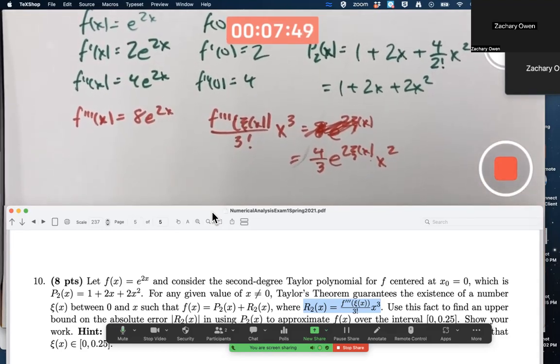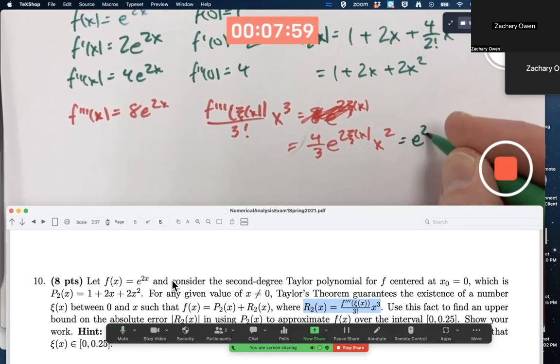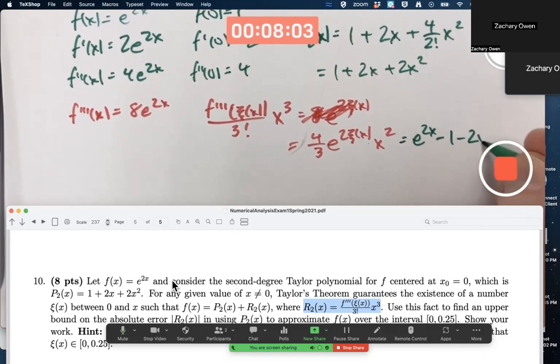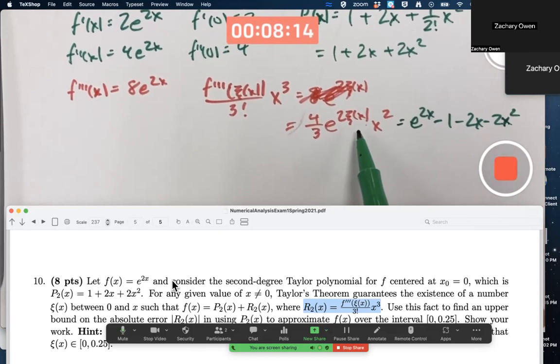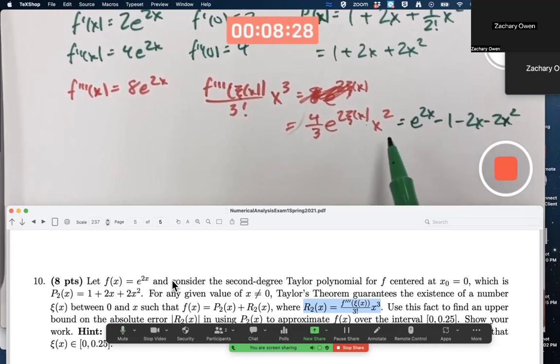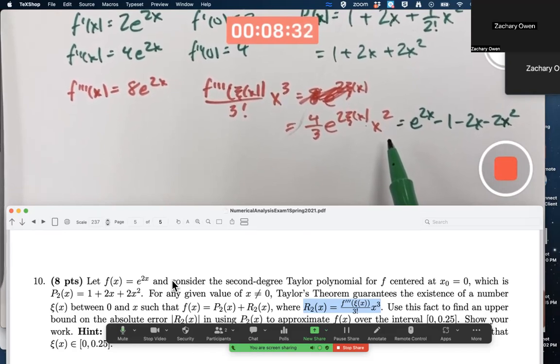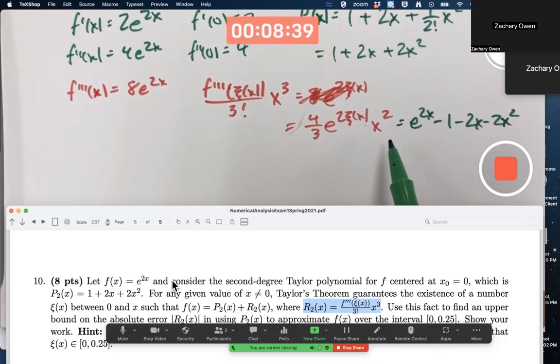What did we do last Thursday? Last Thursday, we set this equal to f of x minus p2, in this case, e to the 2x minus 1 minus 2x minus 2x squared, and we solved for xi of x. And we could do that here, actually. I could have made this part of the exam problem. You could solve for xi of x here, you could divide both sides by x cubed, you could multiply both sides by 3 fourths, then take the natural log of both sides, and then finally divide by 2. xi of x is going to be one half natural log of an expression. So we could do that here, it's possible. But in general, that was illustrating Taylor's theorem, in general, we don't know what xi of x is, and we maybe can't solve for it in general. But we do know it's between 0 and x, whatever x happens to be.